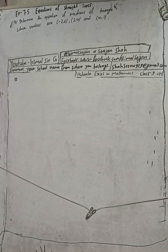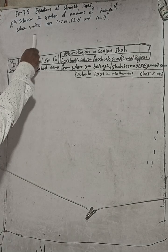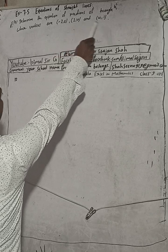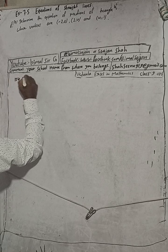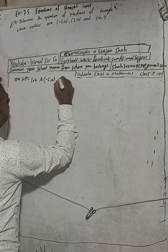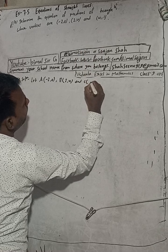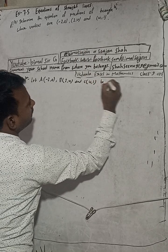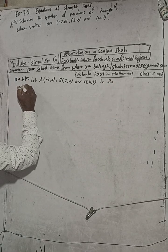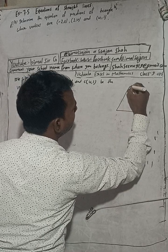Hi Class 9 and 10 students, welcome back to Bimalsarji YouTube channel. This is question number 12b, Exercise 7.5 - Equations of Straight Lines, Class 9 Optional Mathematics. The question is: determine the equation of medians of a triangle whose vertices are (-2, 0), (2, 4), and (4, 1). Let A = (-2, 0), B = (2, 4), and C = (4, 1) be the vertices of triangle ABC.